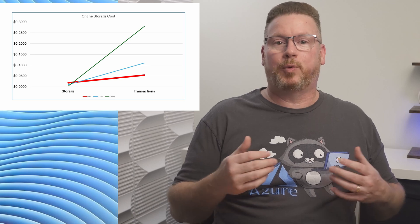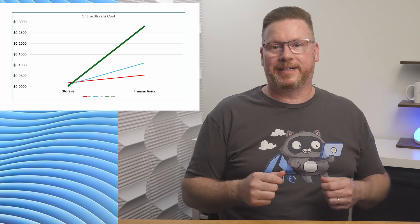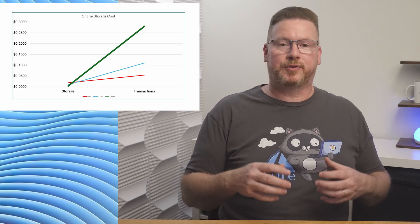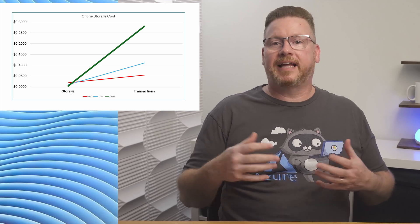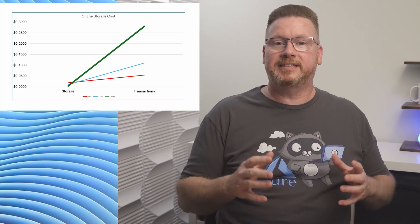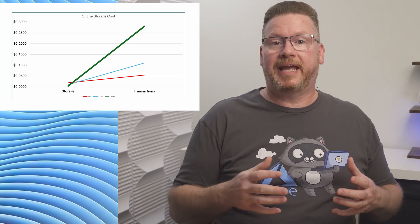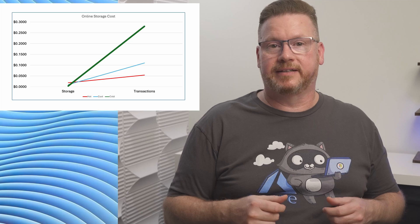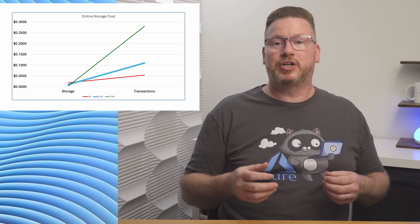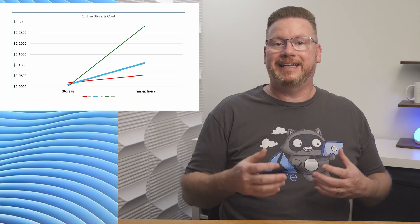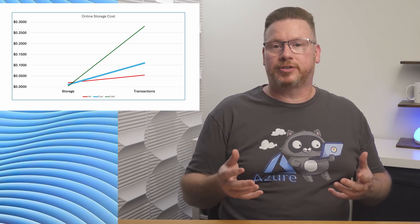On the opposite end, we have the cold tier in green. This is the cheapest option for storing data but the highest of the online options for accessing it. If the data is unlikely to be accessed but needs to be saved for at least 90 days, the cold tier may be a good option — backup data or compliance data are good candidates. And between the two, we have the cool tier in blue. The cool tier is a good option for data with low transactions that needs to be stored for at least 30 days — application data sets or short-term backups, for example.